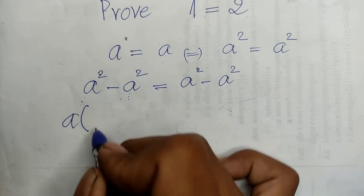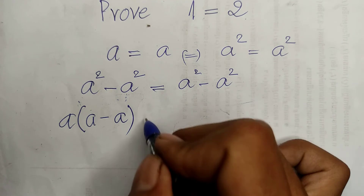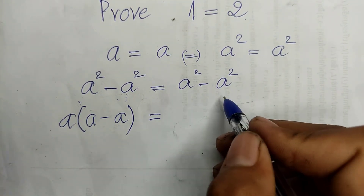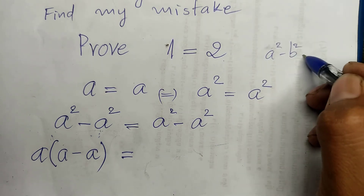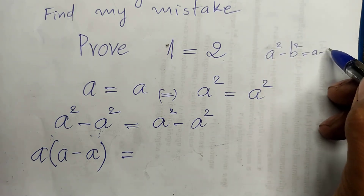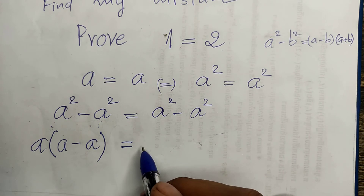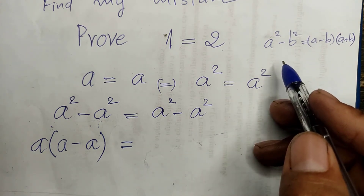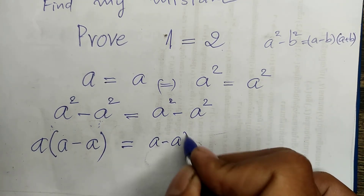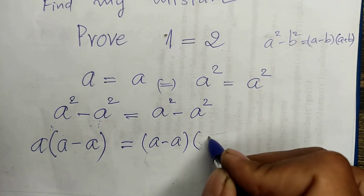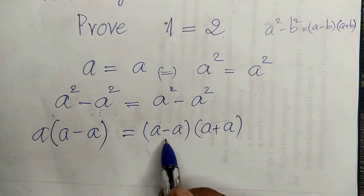That is equal to a squared minus a squared. Now I take a out as a factor, so we get a multiplied by (a minus a). And now I use the rule: a squared minus b squared is equal to (a minus b) multiplied by (a plus b). So we have a squared minus a squared equals (a minus a) multiplied by (a plus a).